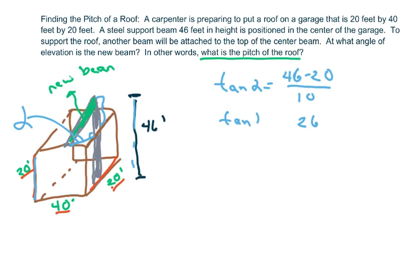So, we have tan of alpha equals 26 over 10. And the reason we're getting 10 is because this is supposed to be positioned, and like I said, I didn't draw this very well. But this is supposed to be in the center of the garage.